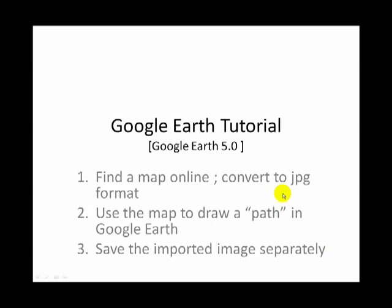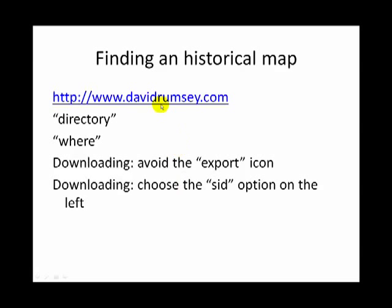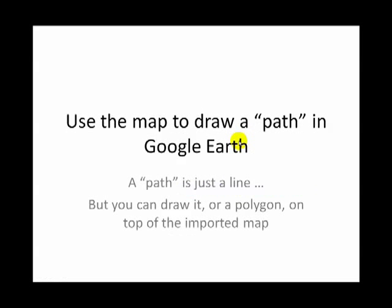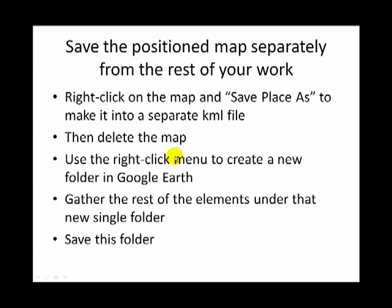To quickly summarize what we've been doing in this tutorial: we found a map on the David Rumsey site, converted it to JPEG format, brought it into Google Earth, drew a path and some polygons, and then saved the imported image. Here's the address of irfanview.com, which is the free program I recommend — don't forget the plugins. Don't be intimidated by the word path or polygon; you'll be able to make those with a little bit of practice. To save the image you'll need to follow these steps, and you can pause the video here if you'd like to read them or take some notes.